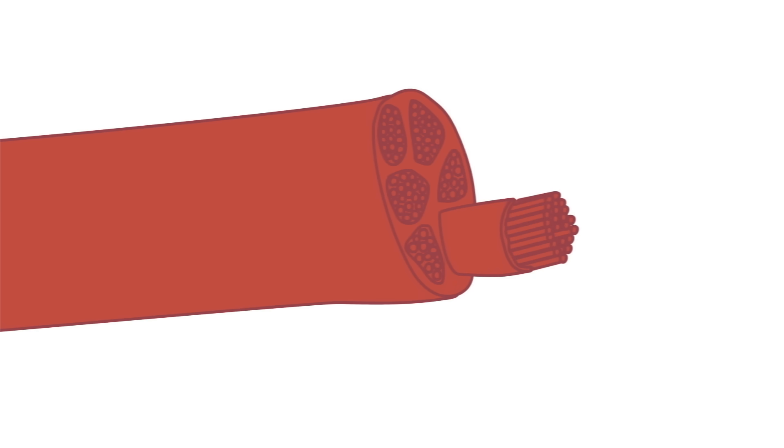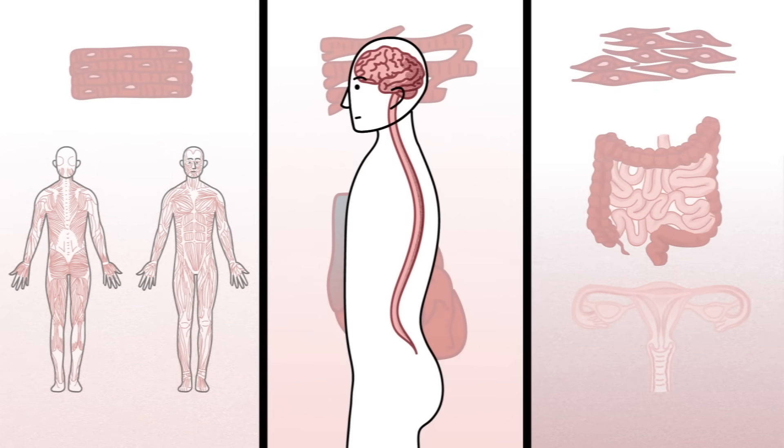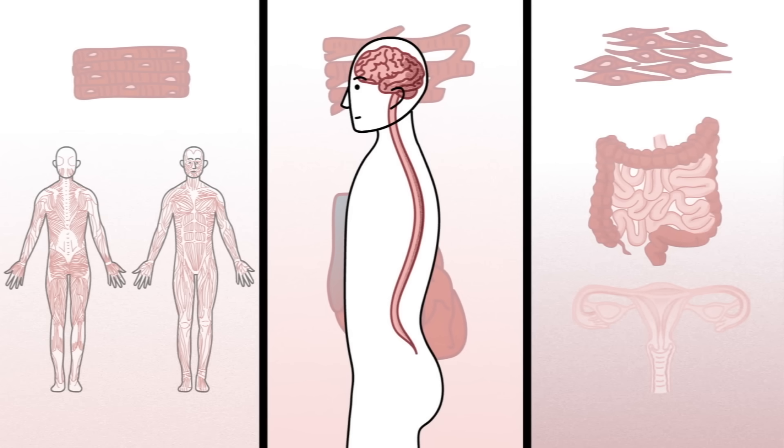All three types are made up of muscle cells, also known as fibers, bundled tightly together. These bundles receive signals from the nervous system that contract the fibers, which in turn generates force and motion.